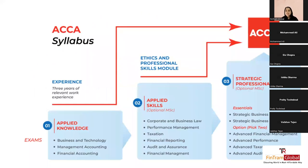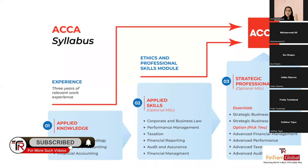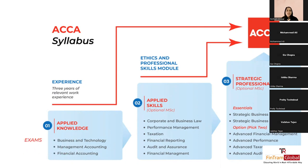The ACCA syllabus has three levels. First is the Applied Knowledge level with three subjects: Business and Technology, Management Accounting, and Financial Accounting. This level is the easiest, especially for commerce background students who've studied business studies, economics, and accountancy in 11th and 12th grade. Business Studies and Economics map to Business and Technology; your normal accounting trial balance and journal entries are Financial Accounting; and cost accounting is Management Accounting. This level uses on-demand exams.